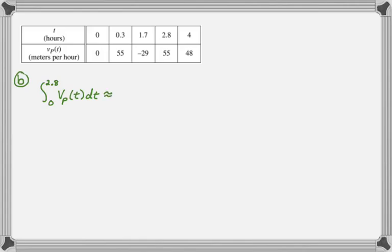For the trapezoidal sum, that's approximately one half the height times the sum of the bases. So it's one half, and our first trapezoid goes from 0 to 0.3, so that's a height of 0.3, and then the sum of the bases 0 and 55. Then the second trapezoid, plus one half, we go from 0.3 to 1.7 which is 1.4 units. Then we need the sum of the bases: 55 plus negative 29 or 55 minus 29.